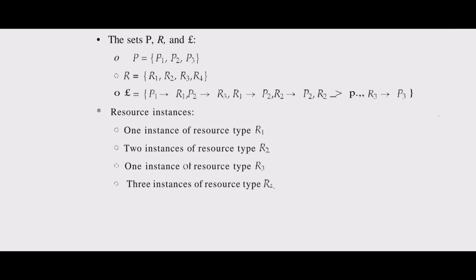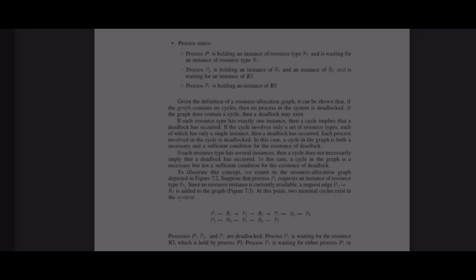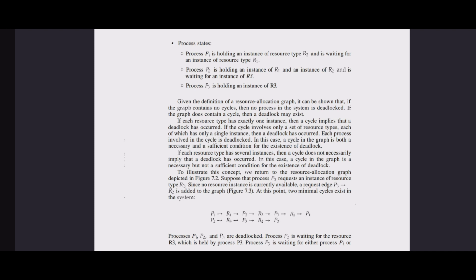The sets P, R, and edges are as follows. Resource instances: one instance of resource type R1, one of R2, one of R3, and three instances of R1. As shown in figure 7.2: Process P1 is holding an instance of R2 and is waiting for an instance of R1. Process P2 is holding an instance of R1 and an instance of R2, and is waiting for an instance of R3. Process P3 is holding an instance of R3.